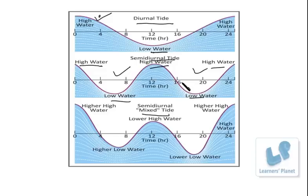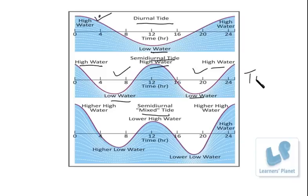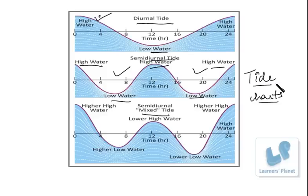By observing tidal patterns in an area and keeping track of the movements of the Earth, Moon, and Sun, it is possible to create tide charts. Predictions can be made which list the time and even the height of various tides. Tide charts are extremely important for navigation, especially in areas with extreme tidal ranges.